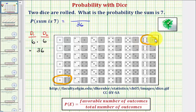These are two separate outcomes because the first die is a one and the second die is a six in one case. In the other case, the first die is a six and the second die is a one. So these do count as two separate favorable outcomes.